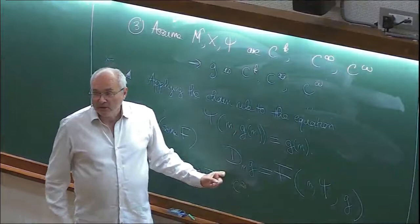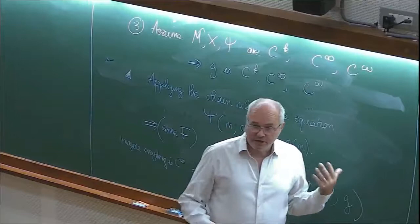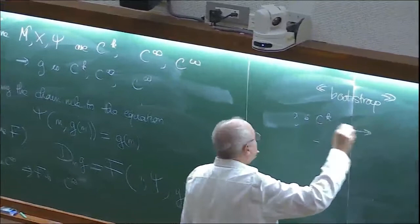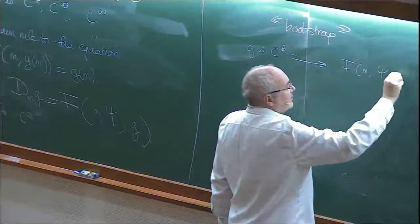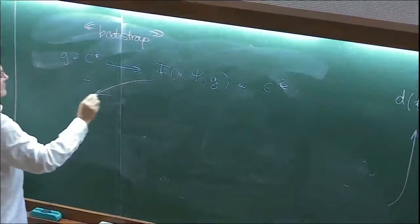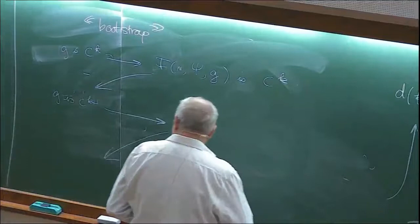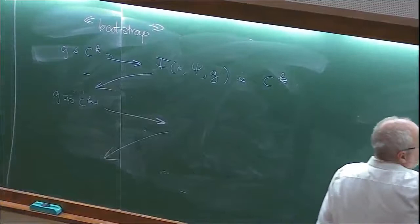Once you have C1, an easy bootstrapping using the chain rule produces everything: you know g is Ck, so this implies f(m, psi, g) is Ck, and then this implies g is Ck+1. So you have this bootstrapping. That's what I wanted to say about contracting maps.